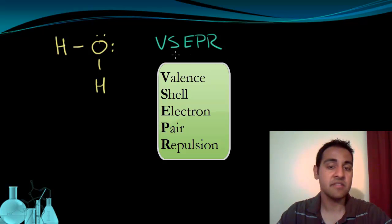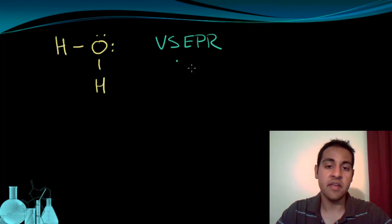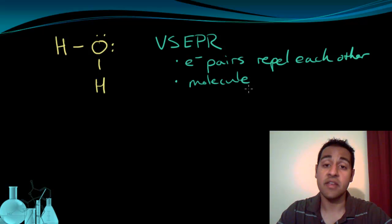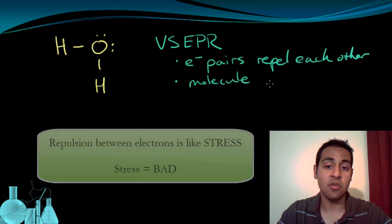And this theory basically has two components. The first part is in the name: electron pairs repel each other. That should be fairly obvious by now because we know that electrons are negative, and if an electron came near another electron, they'd repel each other because they're the same charge. The second part says that the molecule is organized or arranged to minimize these repulsions.